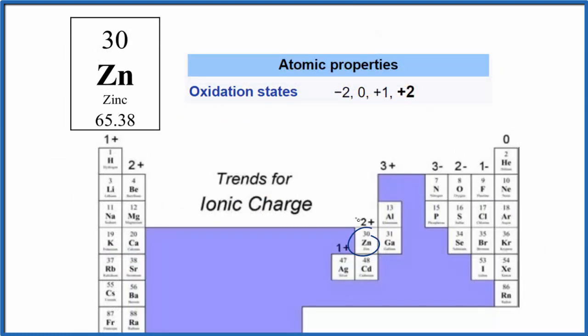It always forms these two plus ions, so that does overlap with oxidation state. But when it combines with other elements like Zn2Cl2, we saw it can have oxidation states different than the plus two.